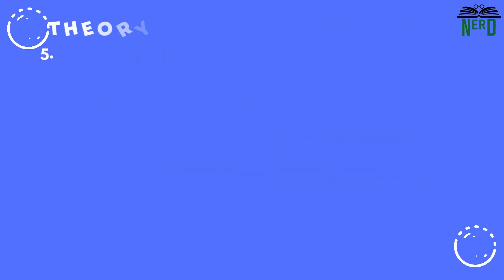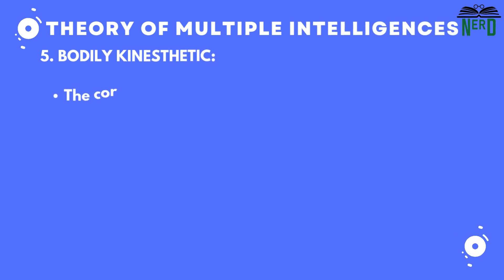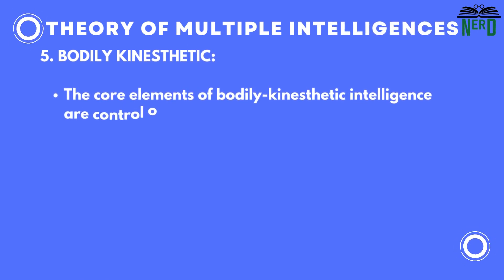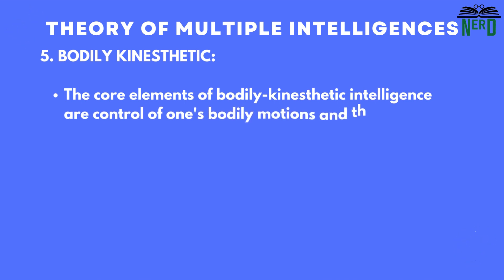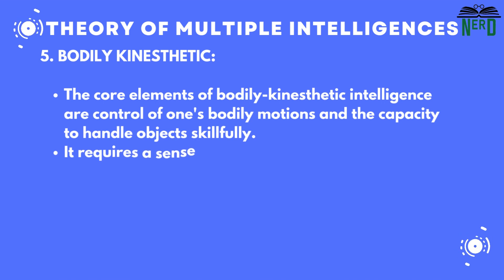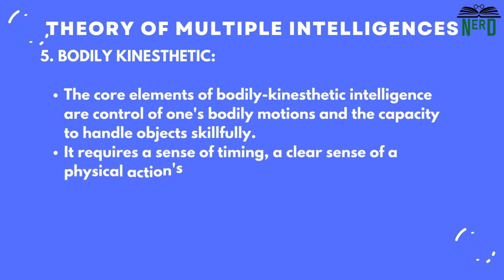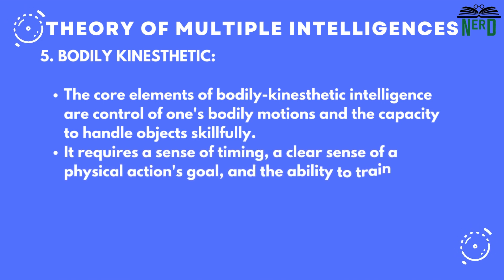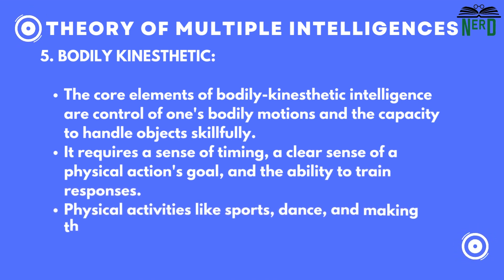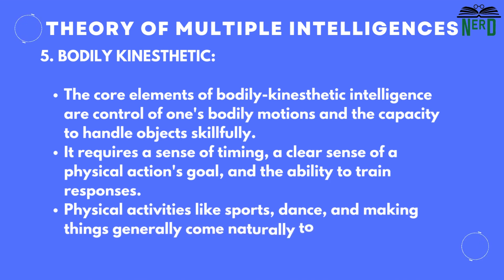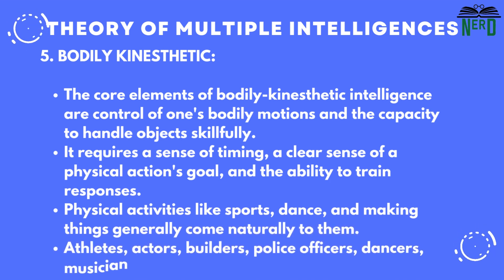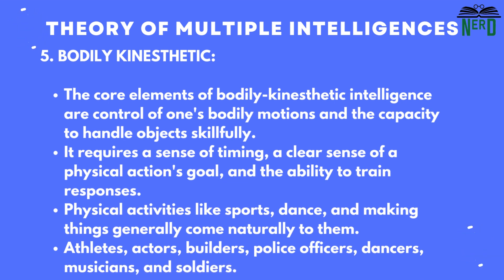Fifth is bodily-kinesthetic. The core elements of bodily-kinesthetic intelligence are control of one's bodily motions and the capacity to handle objects skillfully. It requires timing, a clear sense of a physical action's goal, and the ability to train responses. Physical activities like sports, dance, and making things generally come naturally to them. They are athletes, actors, builders, police officers, dancers, musicians, and soldiers.